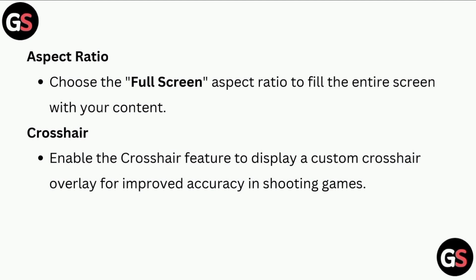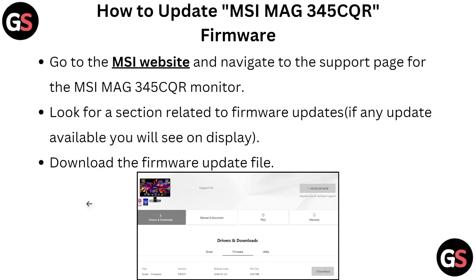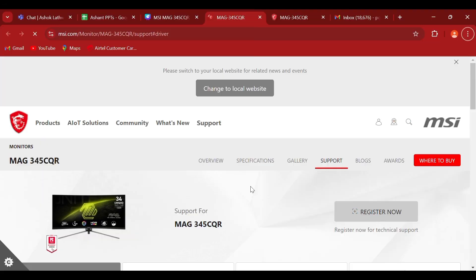For aspect ratio, choose full screen to fill the entire screen with your content. Enable the crosshair feature to display a custom crosshair overlay for improved accuracy in shooting games.